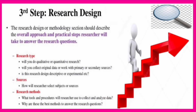The third step of the research proposal is research design. The research design or methodology section should describe the overall approach and practical steps the researcher will take to answer the research question. Here the researcher will answer questions about research type: will you do qualitative or quantitative research? Will you collect original data or work with primary or secondary sources? Is the research design descriptive or experimental? Then source — how will the researcher select subjects or sources? What type of research method will be used? What tools and procedures will the researcher use to collect and analyze data? Why are these the best methods to answer the research questions?